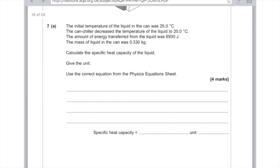The can chiller decreased the temperature of the liquid from 25 to 20 degrees Celsius. The amount of energy transferred from the liquid was 6,930 joules. The mass of liquid in the can was 0.330 kilograms. Calculate the specific heat capacity of the liquid, give the unit, and use the correct equation.